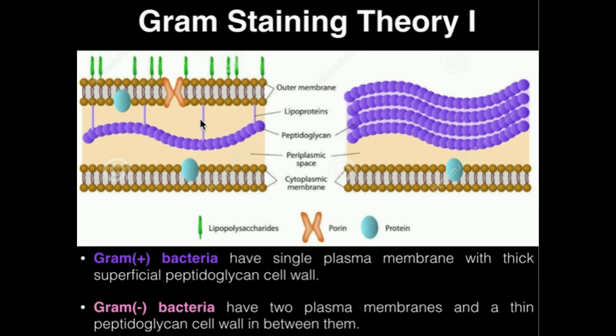The question is whether or not the peptidoglycan layers will retain the crystal violet dye. Here's the way I want you to think about it: imagine you have two pools — like the pools you swim in. The one on the right is not filled with normal water; it's actually filled with quicksand, or molasses, something very viscous. And the pool on the left is just filled with normal water.